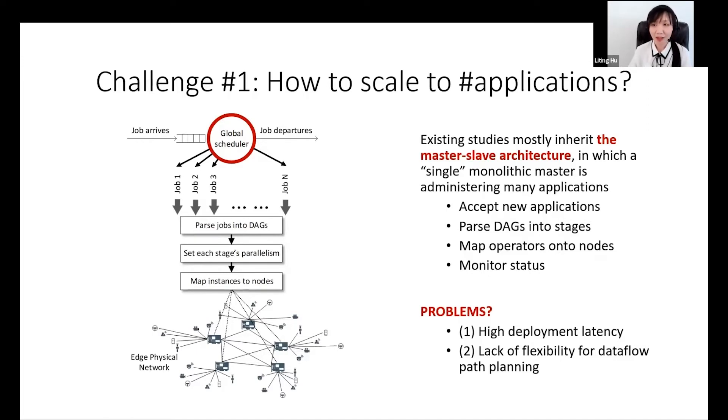This is because they must use a first-come, first-serve approach to deploy applications, which causes applications to wait in a long queue and thus leads to high deployment latency. And second, they limit themselves to a fixed execution model and lack the flexibility for data flow path planning.